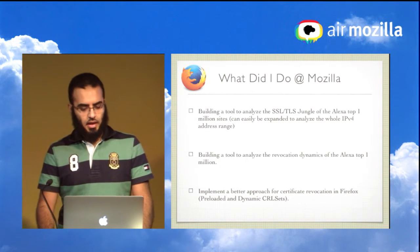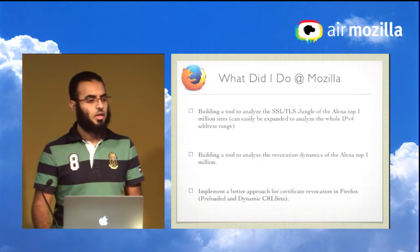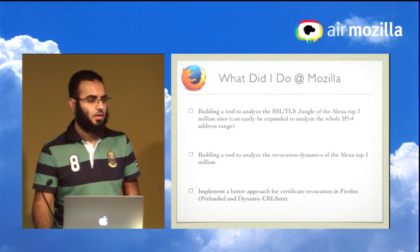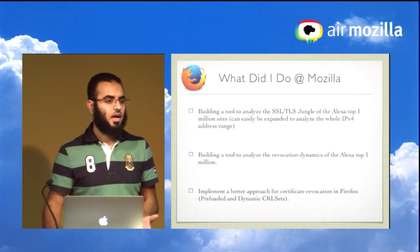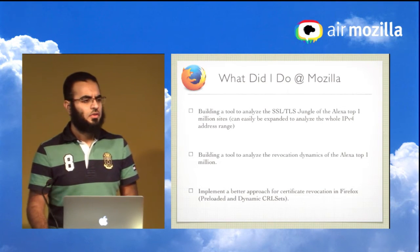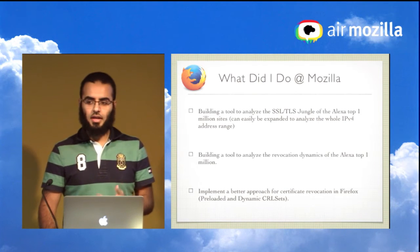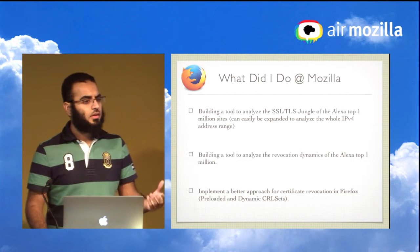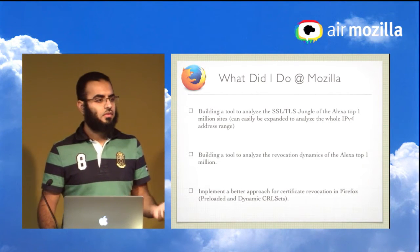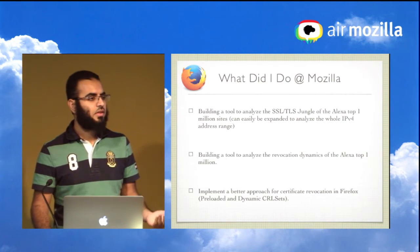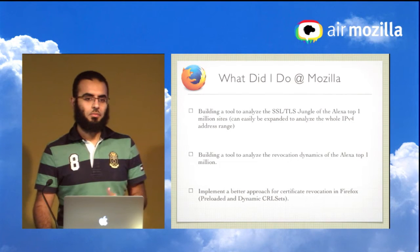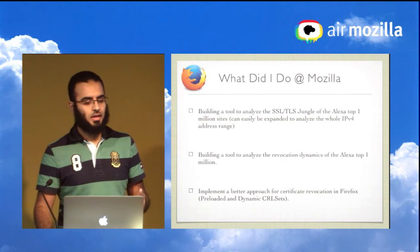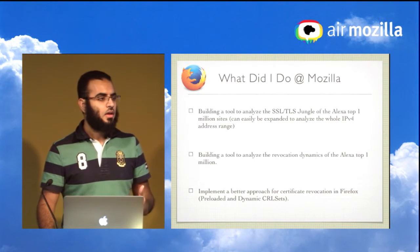What I did at Mozilla over the past three months: I started by building a tool to analyze the SSL and TLS landscape across the Alexa top 1 million sites — looking at what kinds of certificates and secure servers are out there. Then I built another tool on top of that to analyze revocation dynamics: what certificates are being revoked, response rates of CRL servers, and whether all servers are responding.